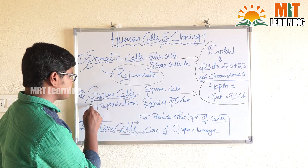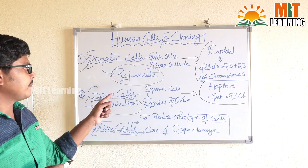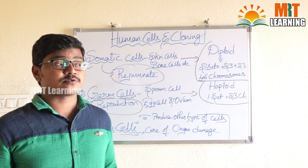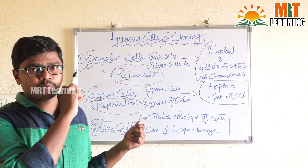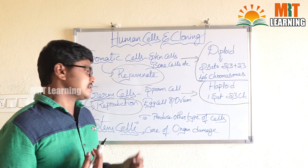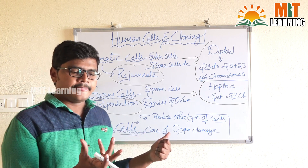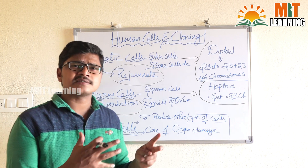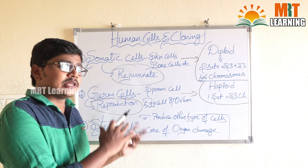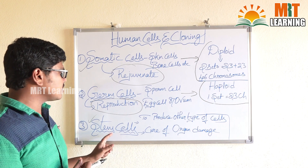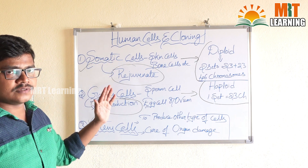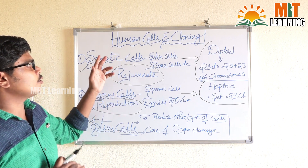The only purpose of germ cells is reproduction. Without germ cells there is no reproduction, so in the process of reproduction, germ cells are very important. Stem cells are very useful to cure damaged organs — some organs that are damaged can be cured with the help of stem cells. They also help in organ transplantation.